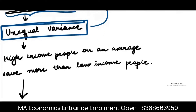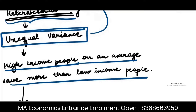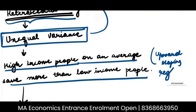High-income people, on average, save more than low-income people. This is represented by the upward-sloping regression line — as income increases, savings also increase.